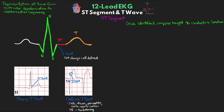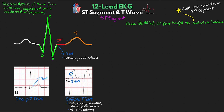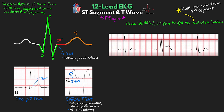The isoelectric baseline is best measured from the TP segment — so the end of the T wave to the start of the P wave of the next beat. This may be difficult to see in patients with fast heart rates, so you may need to use the PR interval or your best judgment if the T and P waves are too close to have a good TP segment. Here are some examples of three different waveforms to help identify ST elevation or depression.